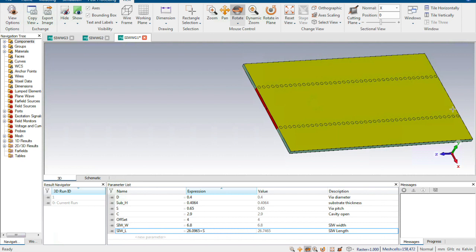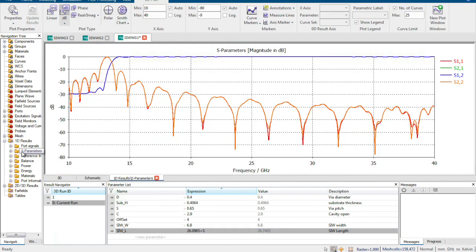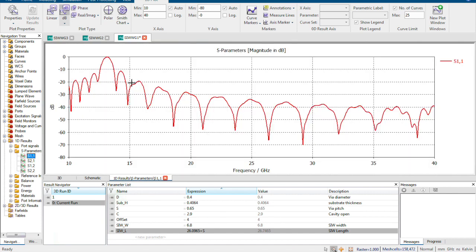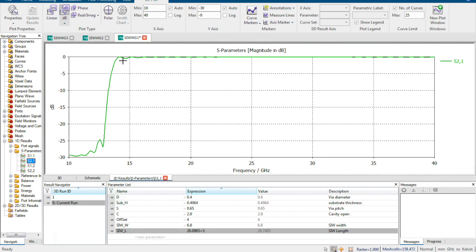And I got the S parameters as you can see here. Here are the S parameters for the reflection coefficient. As you can see, this is the reflection coefficient for this waveguide. Starting from 15 GHz, the reflection for both ports is lower than -20 dB, which means most of the energy is transferred in this cavity, which is good.